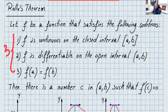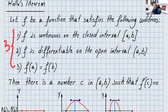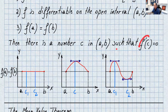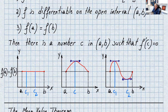And the third condition is f(a) equals f(b). If we have these three conditions, then we can say there is a number c in (a, b) such that f'(c) equals zero. When the derivative of a function equals zero, we have a horizontal tangent line — a minimum or a maximum.